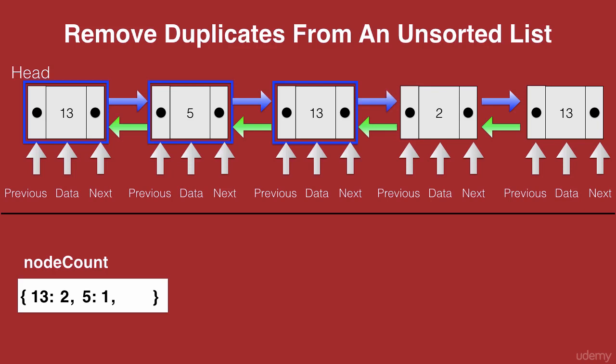And now by using next, we move to the next node. 2 is not present in the dictionary so we add 2 to the dictionary and in the next node, you see that it has the data 13 and 13 already exists. So we increment the count to 3 which means 13 has been encountered thrice in this linked list.